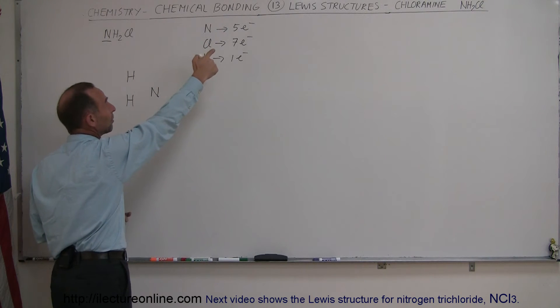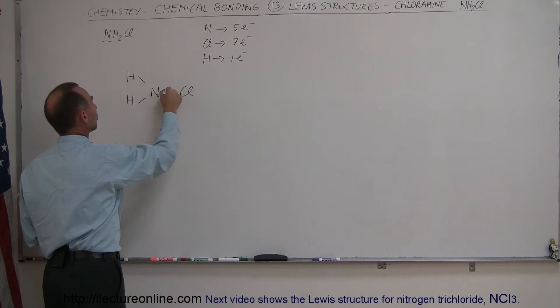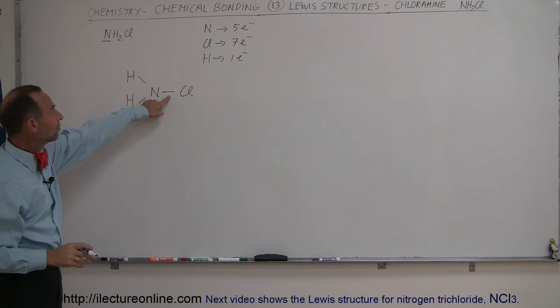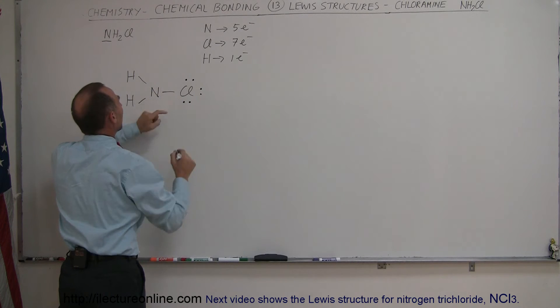Since nitrogen needs three bonds to end up with eight valence electrons, we expect the molecule to look like that. So, one of the chlorine electrons already used for the bonds—it has a total of seven, that means six more, which will be three electrons like this, not associated with any kind of bonding.